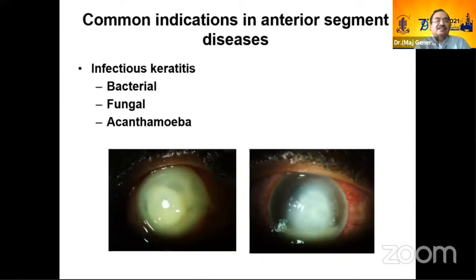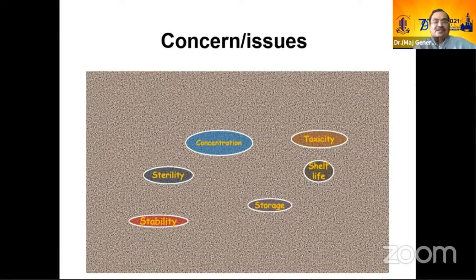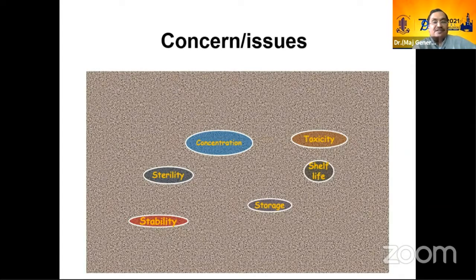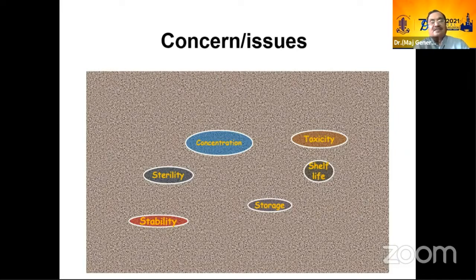These are the common indications for off-label use of fortified drugs. A key concern raised by previous speakers is concentration — when using a fortified drug, whether you are using the proper concentration. Similarly, for intravitreal, intracameral, or intrastromal antibiotics for corneal infections or endophthalmitis, concentration remains a very big issue.